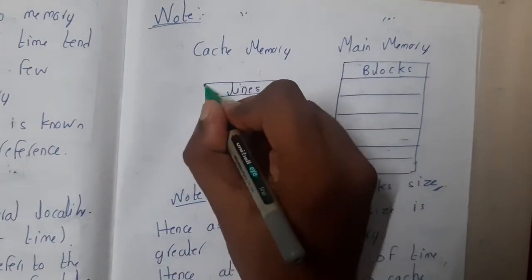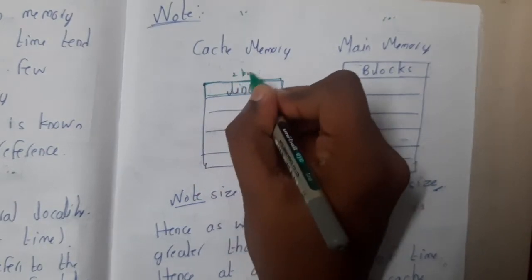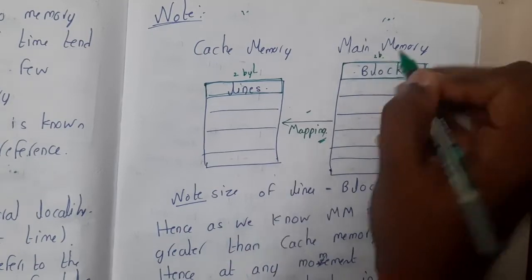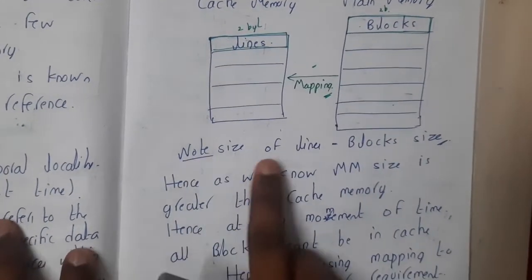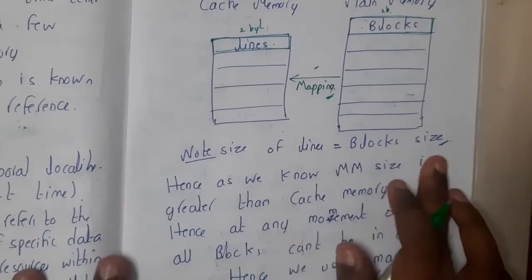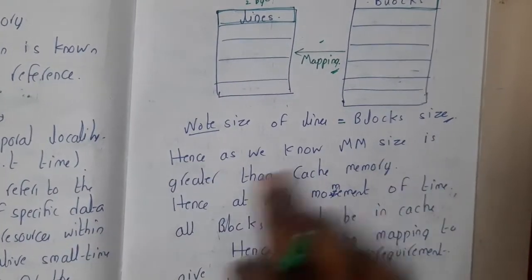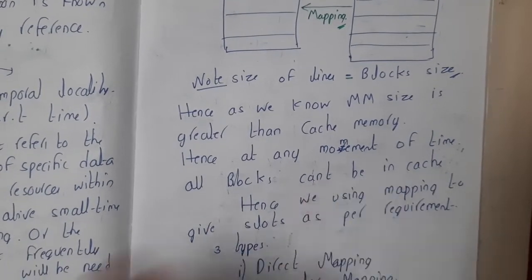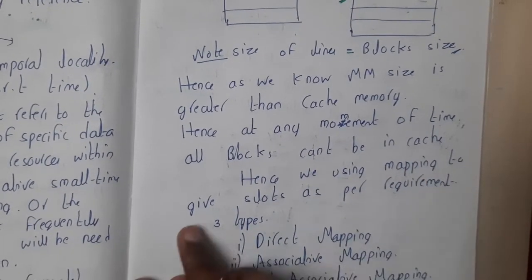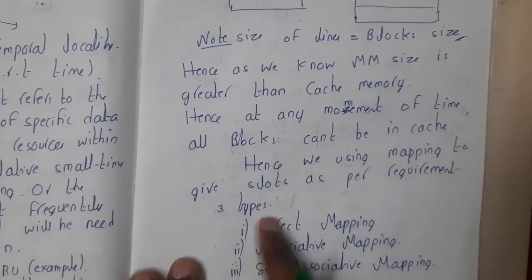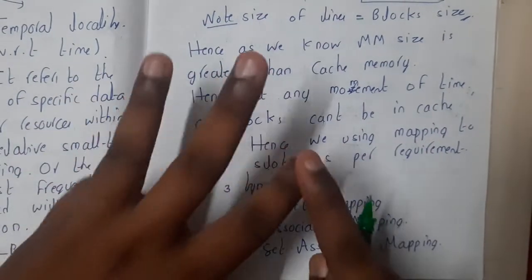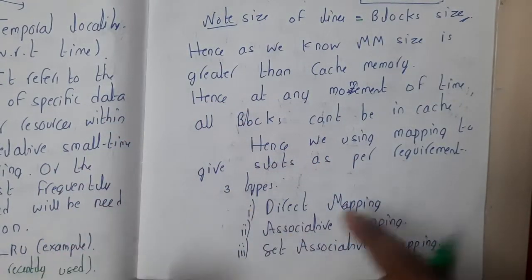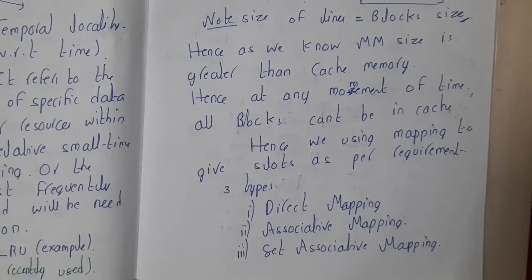One important thing: the size of a cache line equals the block size. So if we assume two bytes, the block size will also be two bytes — both sizes are the same. Since main memory is larger than cache, not all blocks can fit in cache at once, so we use mapping to assign slots as needed. There are three types of mapping: direct mapping, associative mapping, and set associative mapping — these will be covered in the next three lectures.